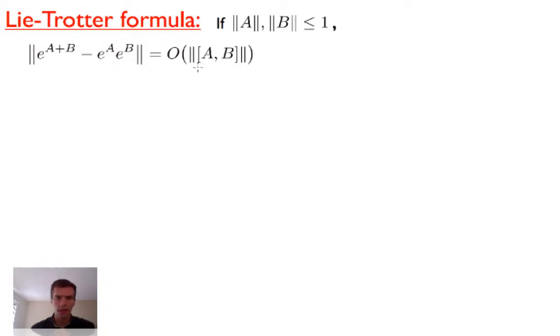If the matrices commute, i.e. their commutator [A,B] (which is by definition A times B minus B times A) is zero, then the exponential of the sum equals the product of the exponentials. Otherwise it need not be.